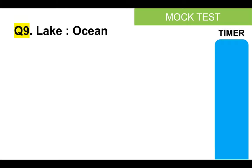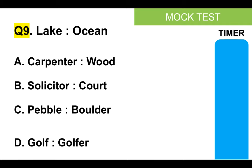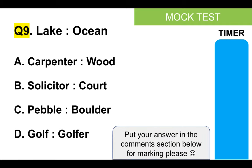Brilliant. Question number nine — a tough one, let's see how many of you get this correct. Great lake and ocean. Is it A, carpenter and wood; B, solicitor and court; C, pebble and boulder; or D, golf and golfer? Please put your answer in the comments section below. Here's your timer.